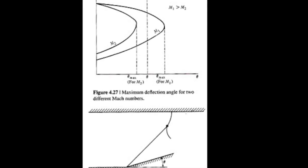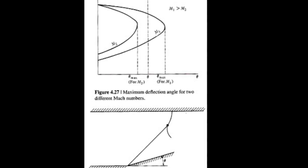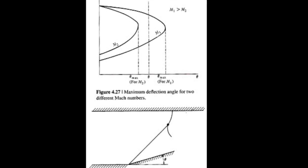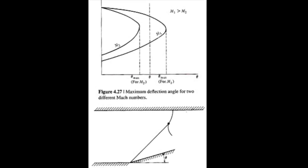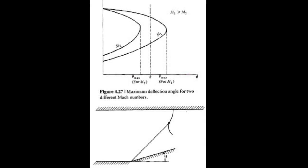Instead, a normal shock is formed at the upper wall to allow the streamline to continue parallel to the wall. Away from the wall, this normal shock transits to a curved shock.